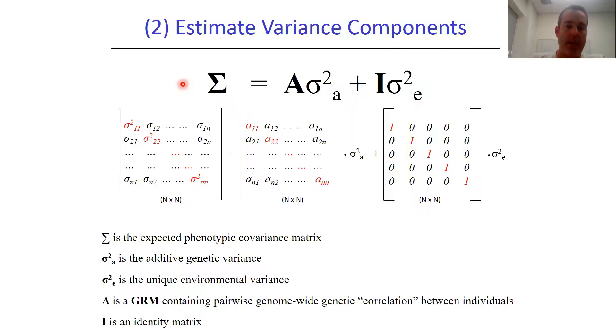Here Σ is the expected phenotypic covariance matrix. This is an n by n matrix because we've got n individuals in our sample with variances, phenotypic variances down the diagonal and covariances on the off diagonal.